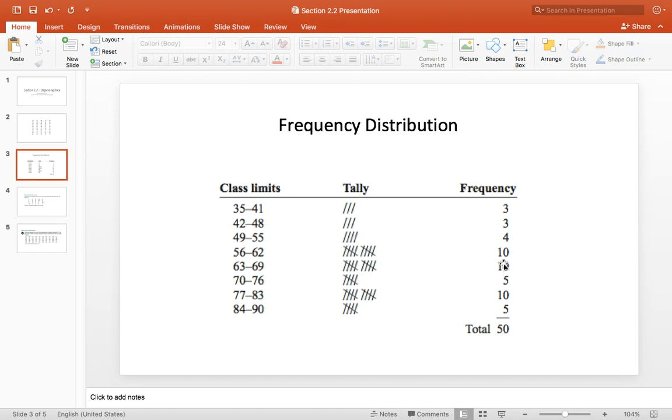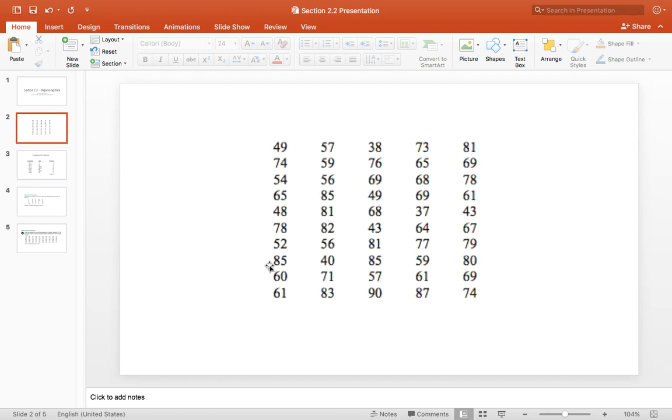And you'll see this is much easier for us to then read and interpret. We can quickly say, well, 10, 20, 24, 27, 30. So we know 30 of the 50 people are the age 69 or younger. So that means 60% of the richest people in the world are 69 years old or younger. So in this form, it allows for us to quickly and easily determine some things about our data, and it's much easier for us to read than it is here.